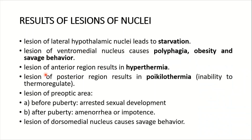Lesion of the anterior region results in hyperthermia — that is, an increase in core body temperature to more than 37 degrees Celsius. Lesion of the posterior region results in poikilothermia, which is the inability to thermoregulate — that is, to maintain body temperature at a normal level regardless of the external temperature.